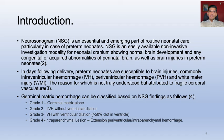Germinal Matrix Hemorrhage can be classified into four grades based on the NSG findings. Grade 1: Germinal Matrix Hemorrhage alone. Grade 2: with intraventricular hemorrhage but without ventricular dilatation. Grade 3: intraventricular hemorrhage with ventricular dilatation. Grade 4: with intra-parenchymal hemorrhage.